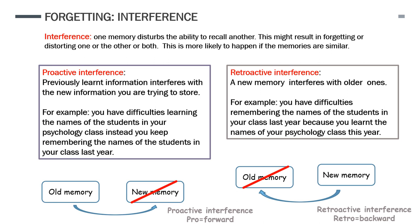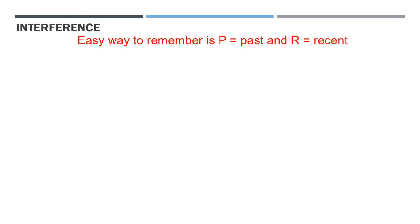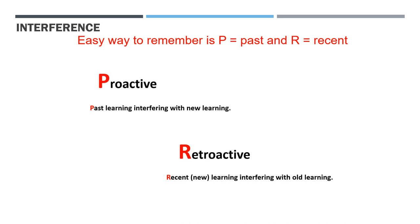There's a way I use to remember which definition is which: P for proactive — P means past, so past learning is interfering with new. R for retroactive — R means recent, so a recent or new memory is interfering with an old one. That's how I remember it by matching the letters. Note that down if you think it'll help; if it confuses you more, don't bother.